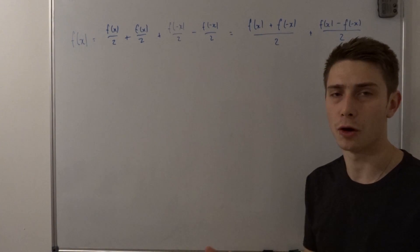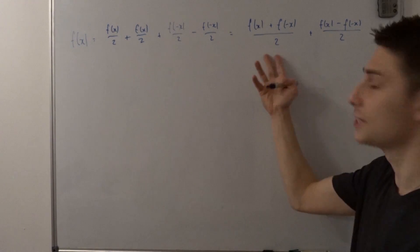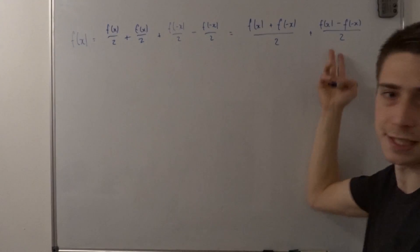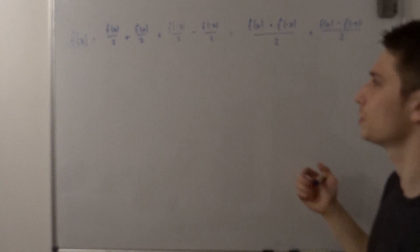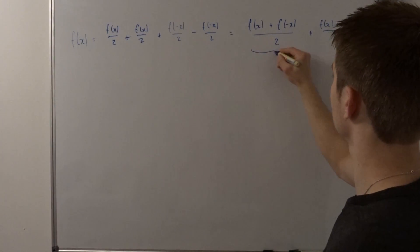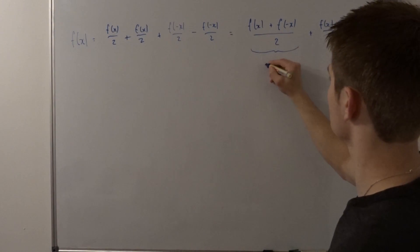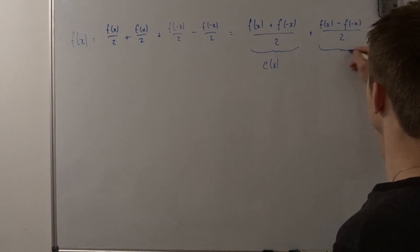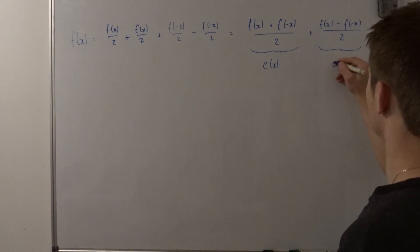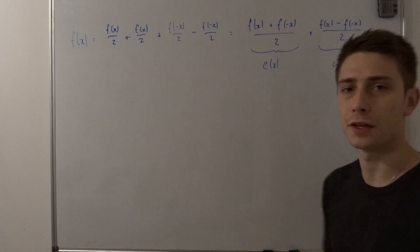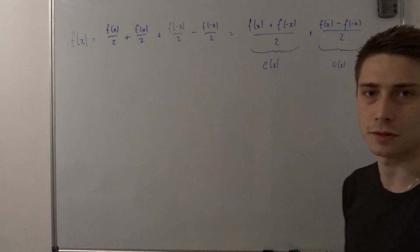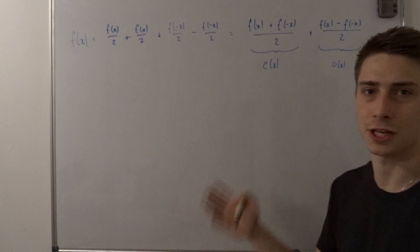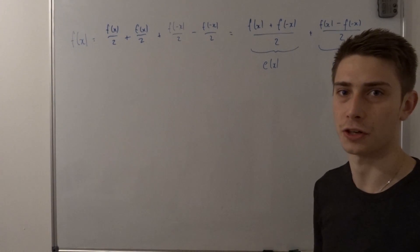And we are already done. This is the even part of our function f of x, and that's the odd part. Let's call them a bit different: e of x for even and o of x for odd. All we have to do is prove that e of x is indeed an even function and o of x is indeed an odd function.